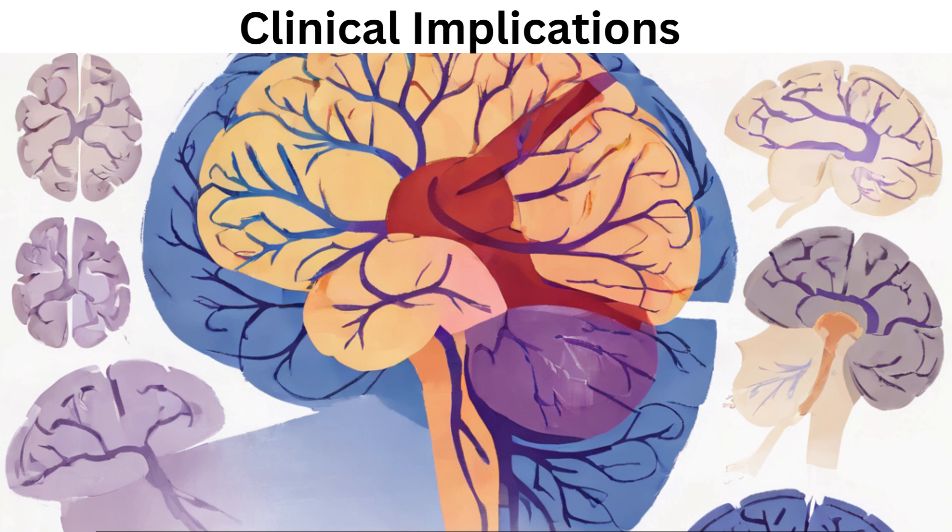In summary, the forebrain is a complex and crucial region of the brain responsible for a wide range of functions, from high-level cognition to emotional regulation and sensory processing. It is a central hub for our conscious experience and is integral to our overall functioning as humans.